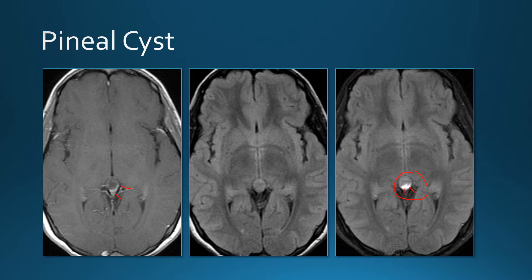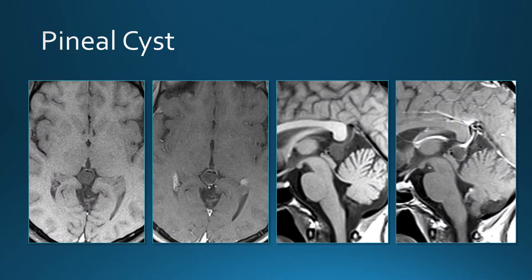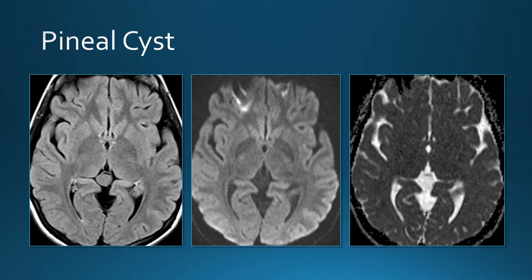Generally it's not enough contrast to make the cyst bright on T1, but it requires very little fluid leaking in to make it bright on post-contrast FLAIR. So sometimes you see enhancement on post-contrast FLAIR but generally not on post-contrast T1. Another pineal cyst — characteristic location, no enhancement. On diffusion-weighted images they're fluid, diffusing similar to water, with very high ADC.